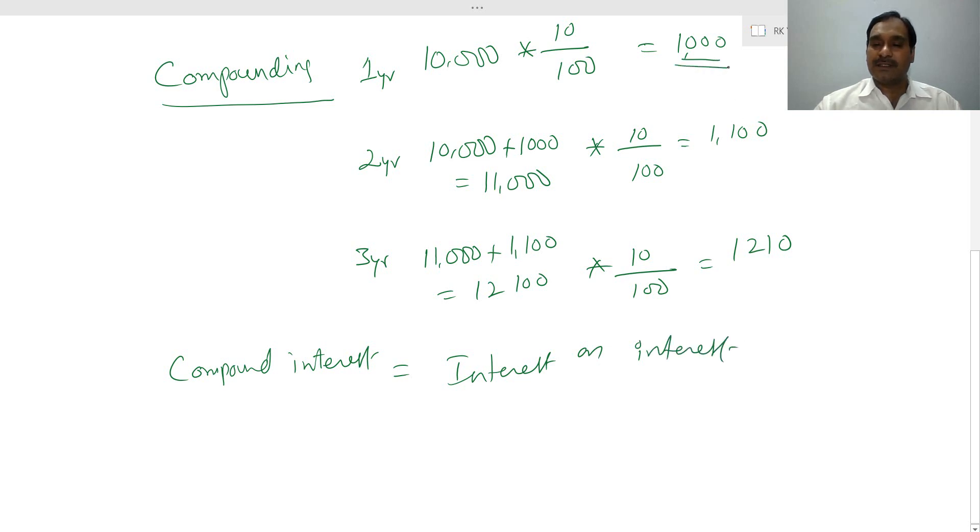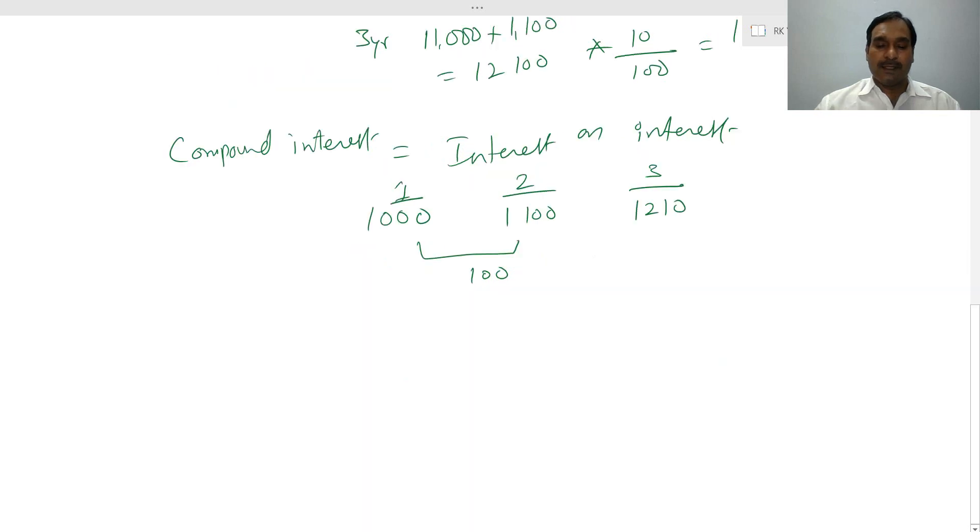Please observe the interest amounts here. In the first year you earn an interest of 1,000. In year two your interest amount is 1,100, and in year three your interest amount is 1,210. So the difference from here to here is 100. That means your 1,000 rupees when you reinvested earned 10% for you, that is 100 rupees. And here the difference is 110. That means the 1,100 interest that you earned previously, on this you earned 10%.